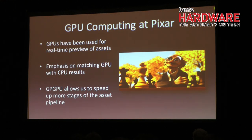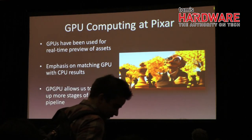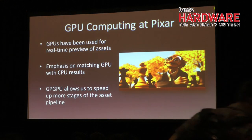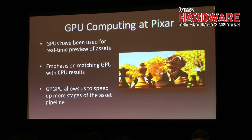If GPU results match RenderMan results closely, we can postpone the switch from CPUs to GPUs until later in our asset pipeline. This allows artists to iterate more quickly and we hope to push that even further in the future. General purpose GPU computing allows us to use GPUs for other features of our asset creation pipeline that don't involve rendering.